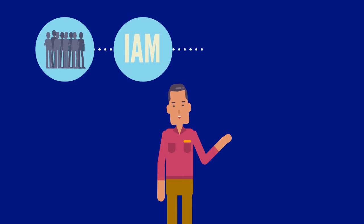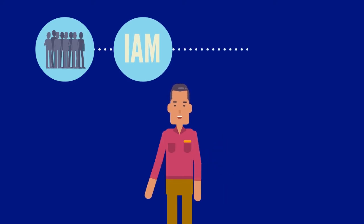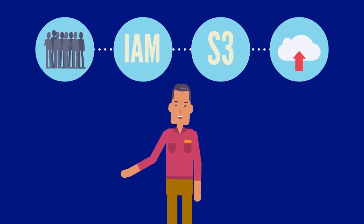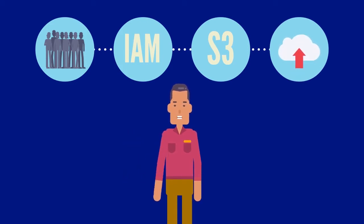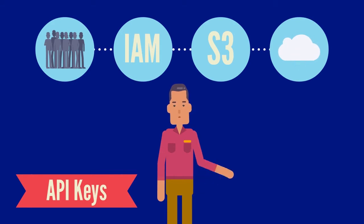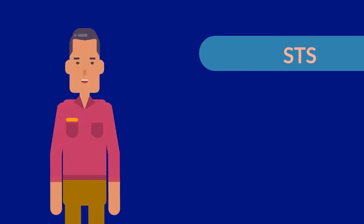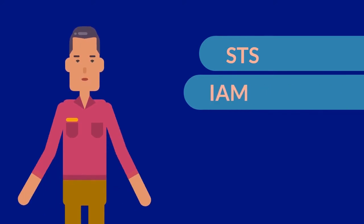It's important to ensure access logging features are enabled on the S3 bucket for CloudTrail. These buckets should be well protected from unauthorized viewing. Be sure to rotate API keys on a regular basis, at least every 90 days. Leverage STS by applying IAM roles to make the instance more secure.